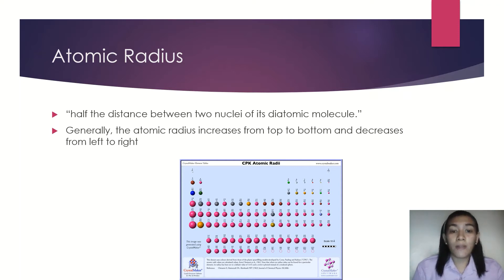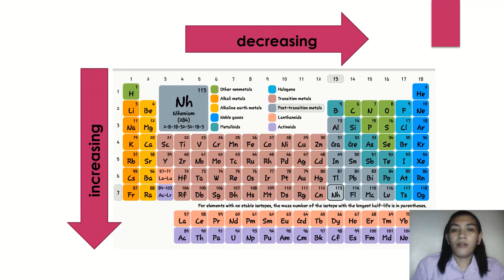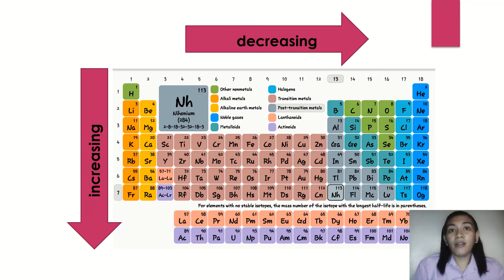Elements at periods 4 and 5 also follow this trend. To summarize: going from left to right, atomic radius is decreasing. From top to bottom, it is increasing.